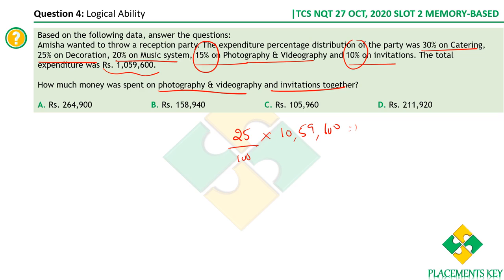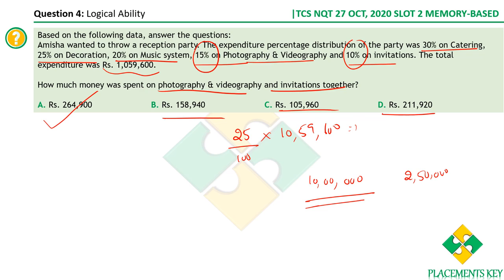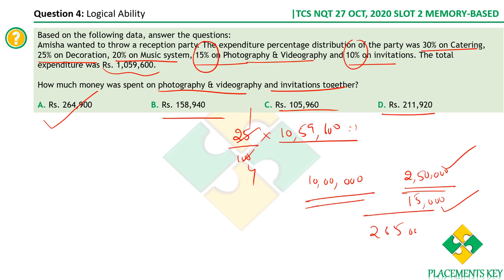25% of 10,59,600 is one-fourth of that value. If the total were 10 lakhs exactly, 25% would be 2,50,000. The extra 59,600 is close to 60,000, and one-fourth of 60,000 is 15,000. So the answer is approximately 2,65,000, which is option A. You can verify conventionally: one-fourth of 10,00,000 is 2,50,000 and one-fourth of 59,600 is about 15,000, giving roughly 2,65,000.